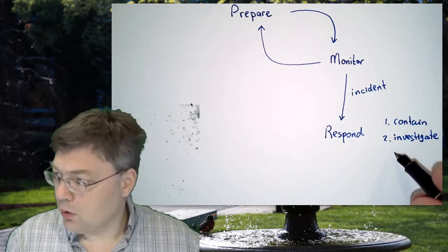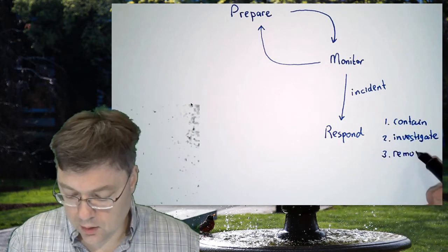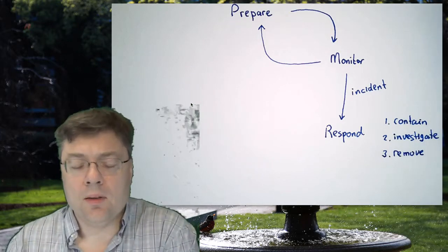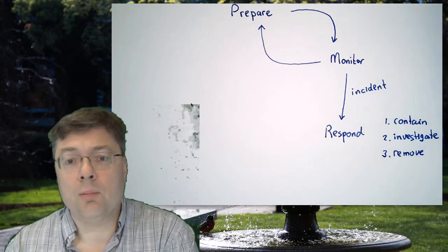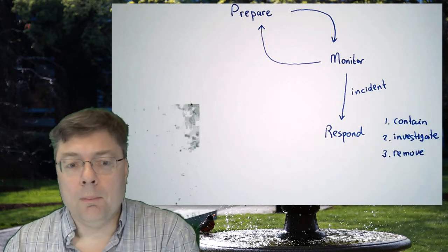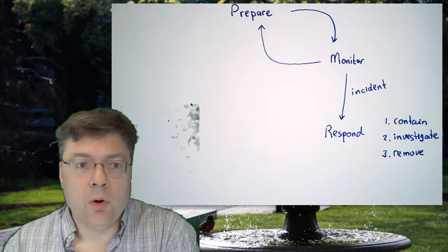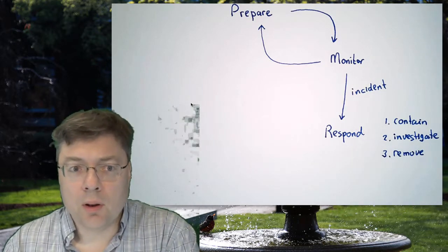And we want to make sure that we remove any artifacts left behind by the attacker. Remember in the attack cycle, once we gained access, one of the first things we did was establishing persistence where we, depending on the situation, put in some remote administration toolkit or a back door. We don't want to keep that back door there. We want to get rid of it.